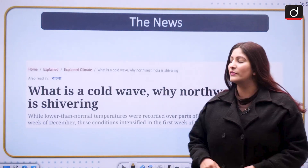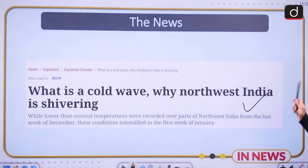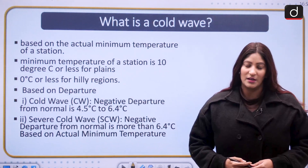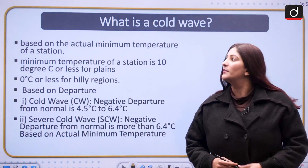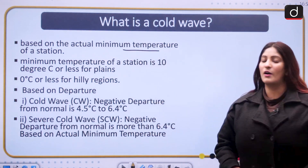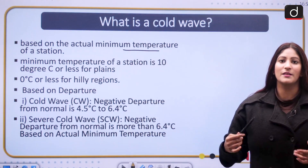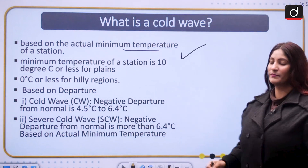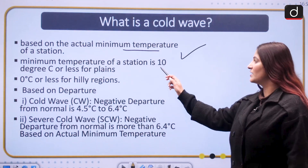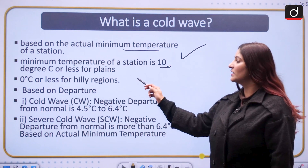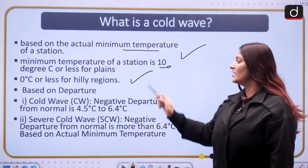First of all, what is a cold wave? The cold wave is a phenomenon based on the actual minimum temperature of a station. The minimum temperature of a station is 10 degrees or less for plains and 0 degrees or less for hilly regions.